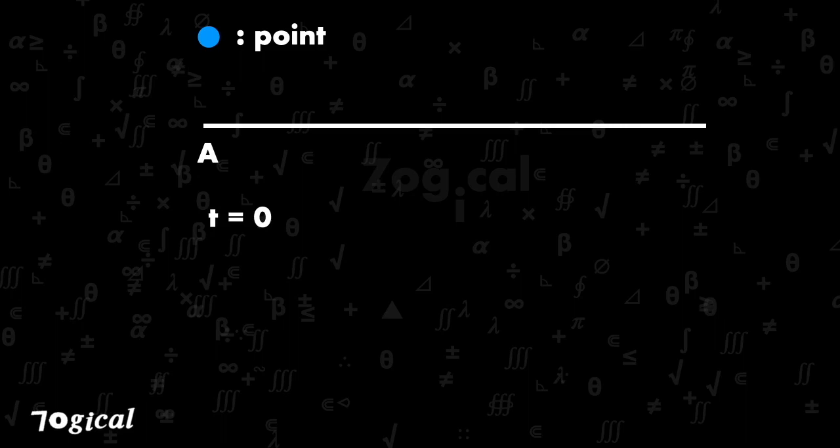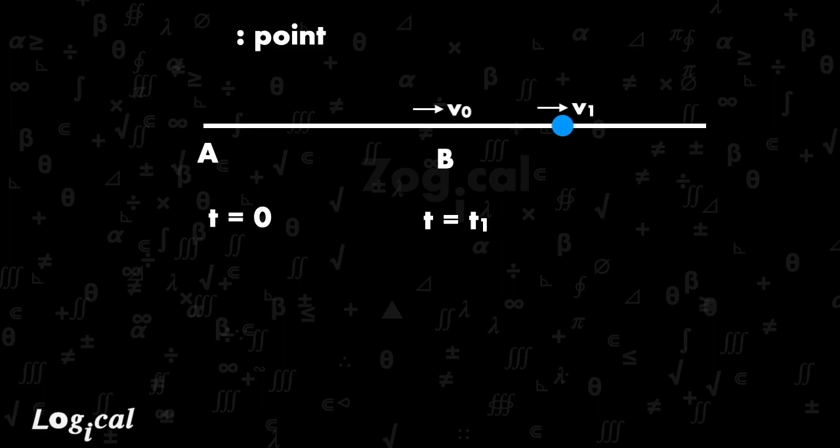This blue circle is the point. Let us consider at time t = 0, it starts moving with velocity v0 from A. At time t = t1, it reaches B. After t = t1, it starts moving with velocity v1 for another half of the time (t2 - t1) / 2, where t2 is the total time.